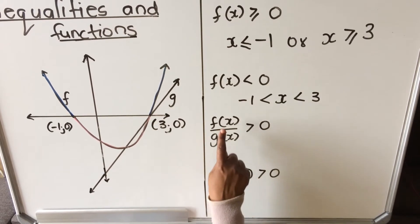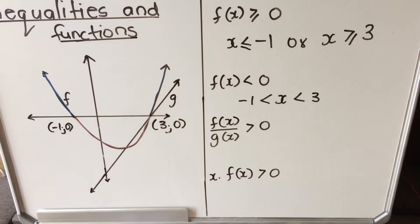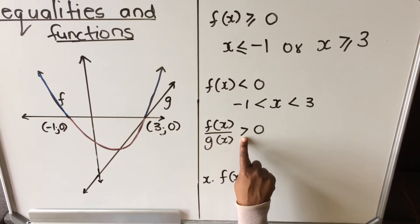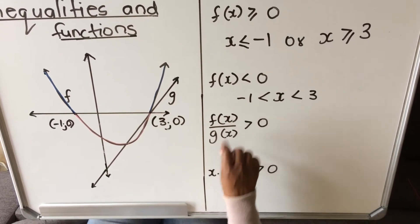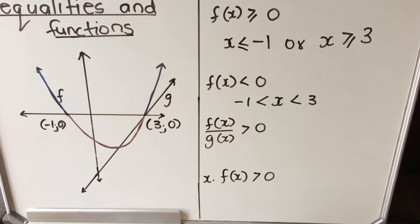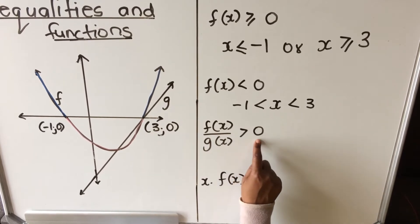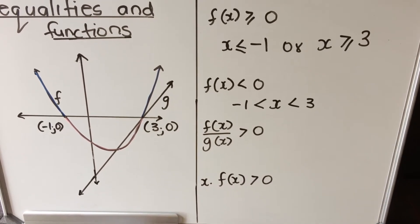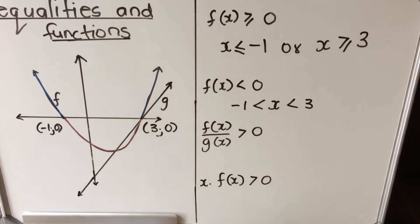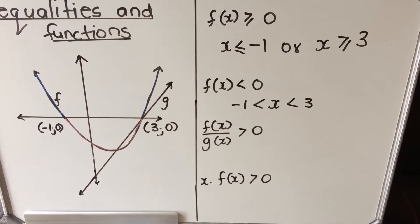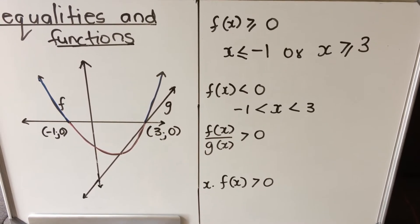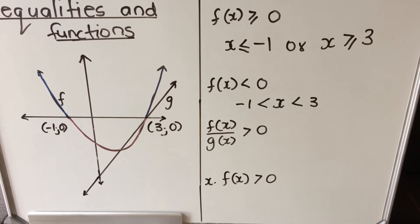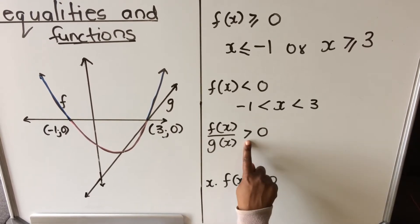Now here we're talking about two functions — the straight line g and the hyperbola f. They're asking where f divided by g is greater than zero — positive. Division and multiplication follow the same sign rules. To get a positive result: positive divided by positive gives positive, and negative divided by negative also gives positive. So I need to find where both functions are either both above or both below the x-axis.